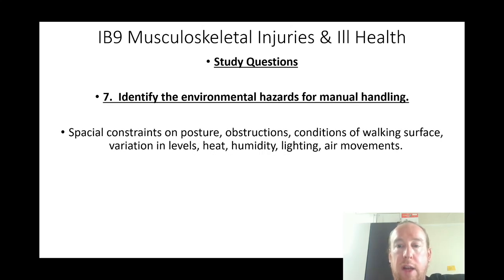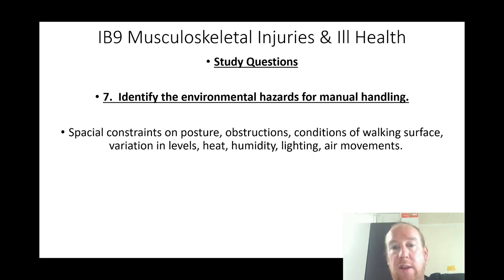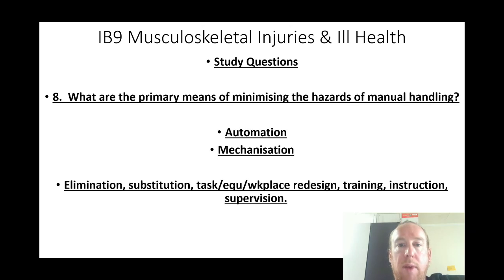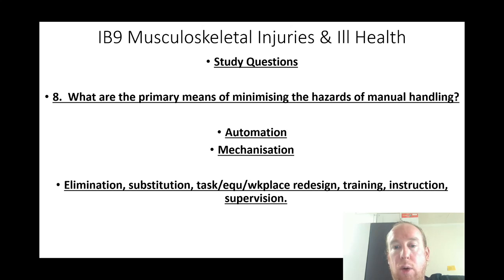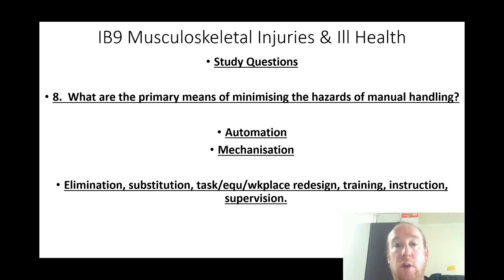Identify environmental hazards for manual handling: special constraints on posture, obstructions, conditions of walking surfaces, variations in levels, heat, light, humidity, and air movements. What are the primary means of minimizing manual handling hazards? Automation, mechanization — elimination, substitution, task/equipment/workplace redesign, training, instruction, supervision, and using teams.